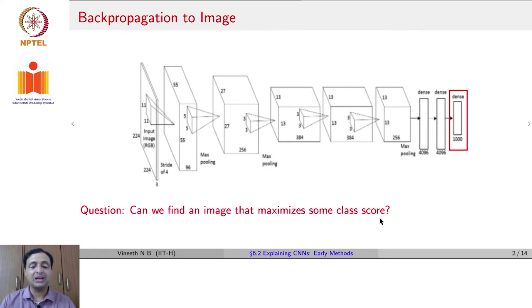An AlexNet or any other network, when trained on ImageNet has been exposed to a lot of, for example, cat images. So at the end of training, does AlexNet know what an average cat looks like? If we ask it to reconstruct an image of a cat, can it do it is the question that we are trying to ask.